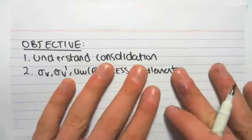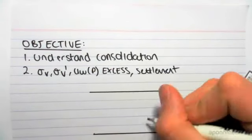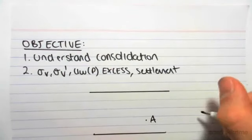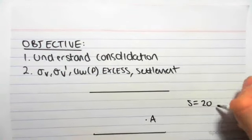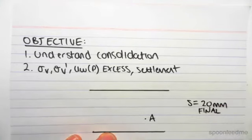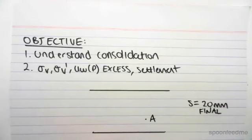The examples we've been doing so far, we've been looking at a profile of soil at any point under the surface and finding the settlement, say 20 millimeters. Now this settlement is in the long time future. It takes a long time to get this final settlement of 20 millimeters, so this is a final settlement. But settlement occurs over time, which is what consolidation is.